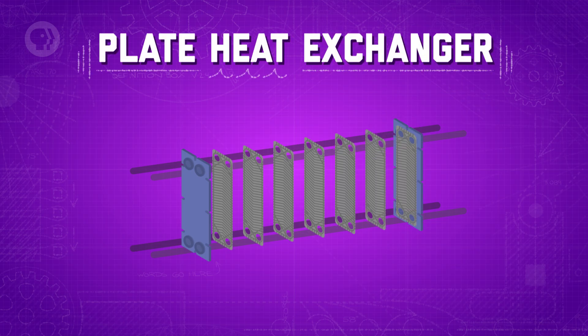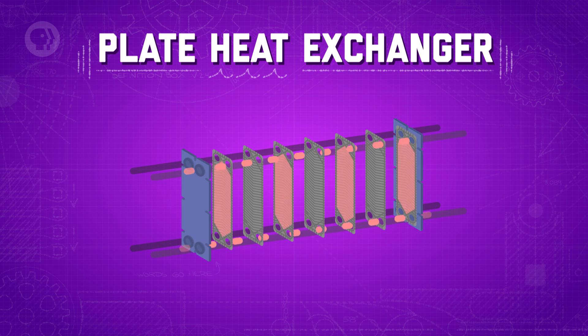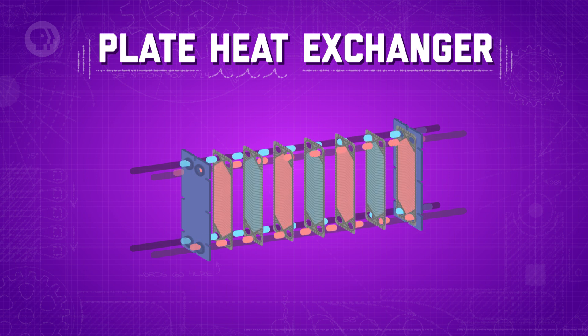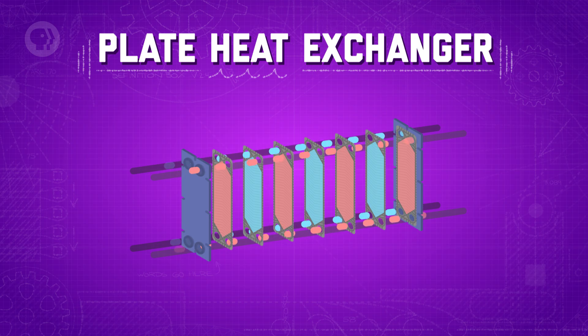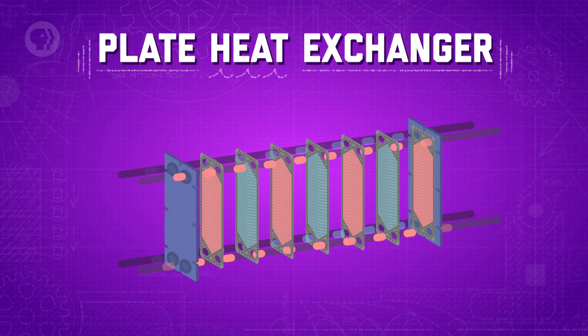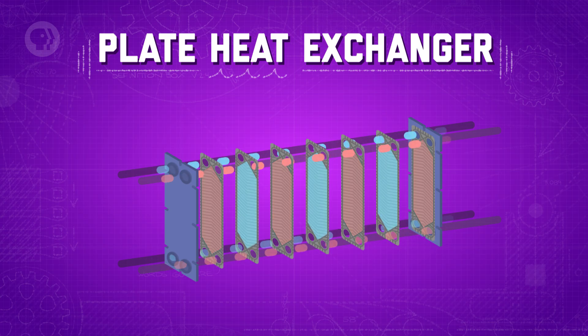Another heat exchanger worth looking at is the plate heat exchanger, which uses metal plates to transfer heat between fluids. The warmer fluid flows through one port and the colder fluid flows through another, typically in counterflow. Both fluids are restricted by seals so they can only flow in a certain path, kind of snaking their way through the exchanger. The fluid between each set of plates alternates, with the plates providing a large surface area for a high rate of heat transfer. Plate heat exchangers would be a little better than concentric tubes for something like an x-ray machine, since it produces a lot of heat you'd want to get rid of.